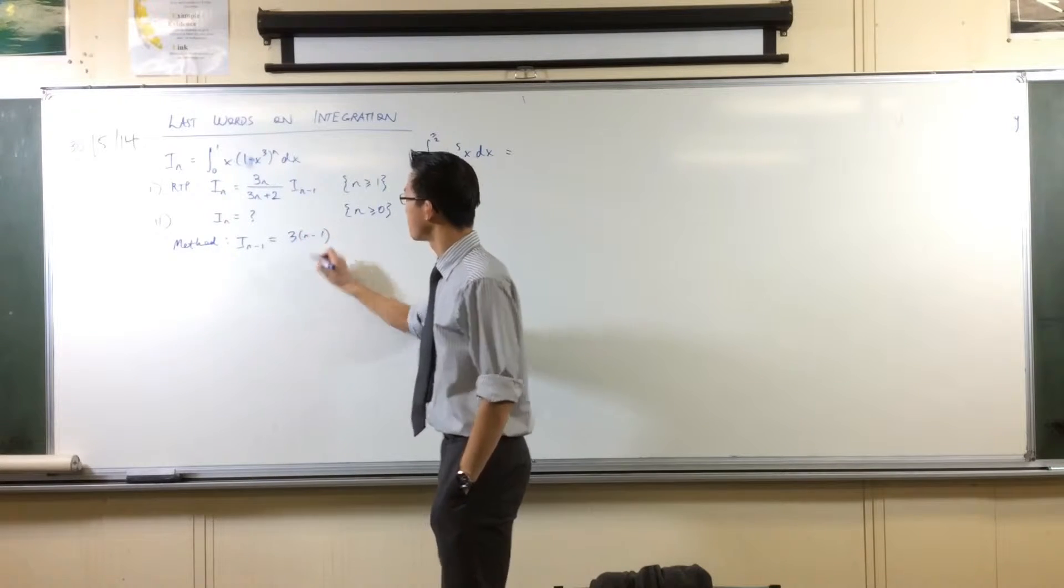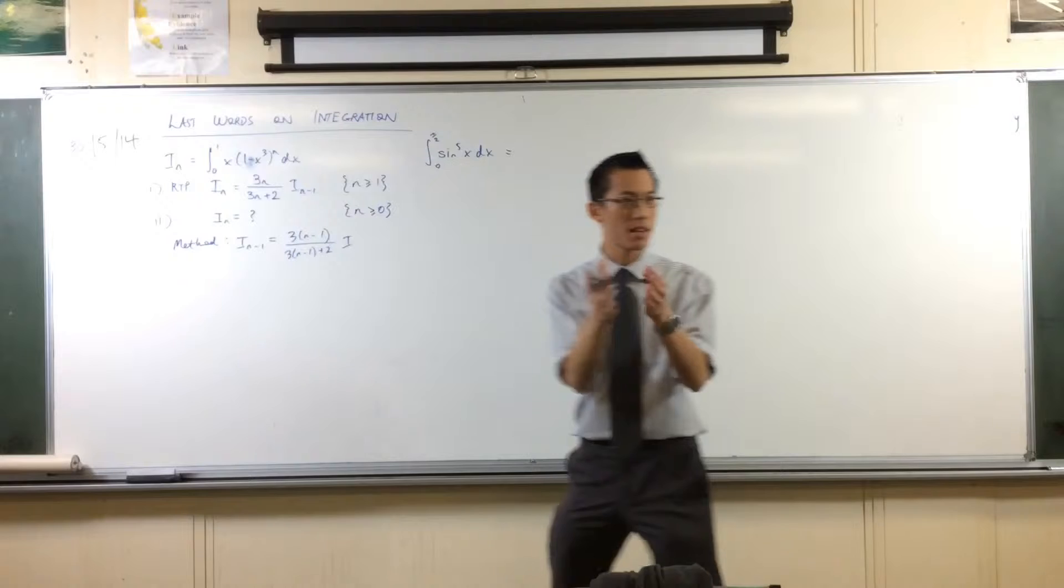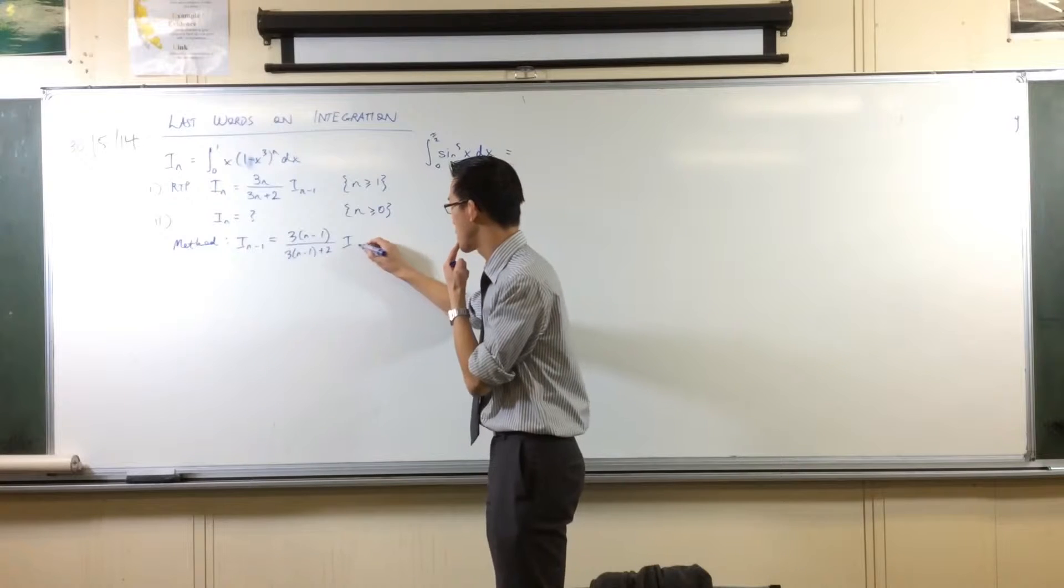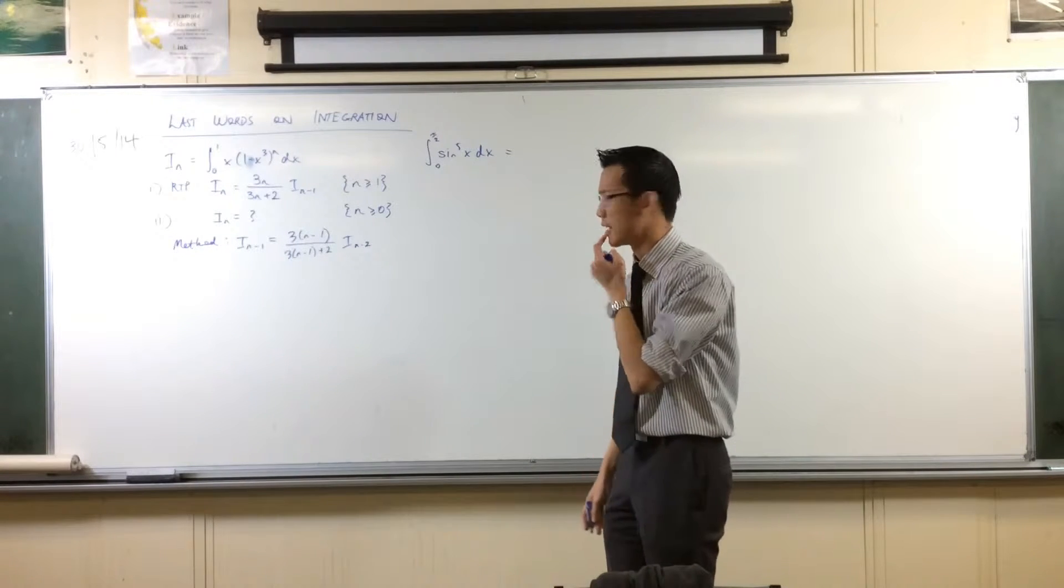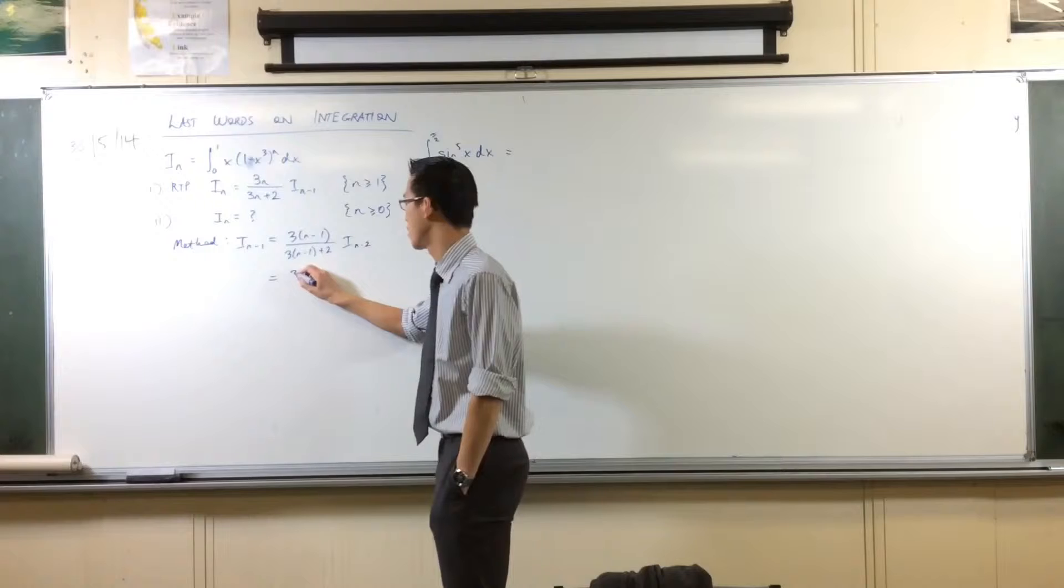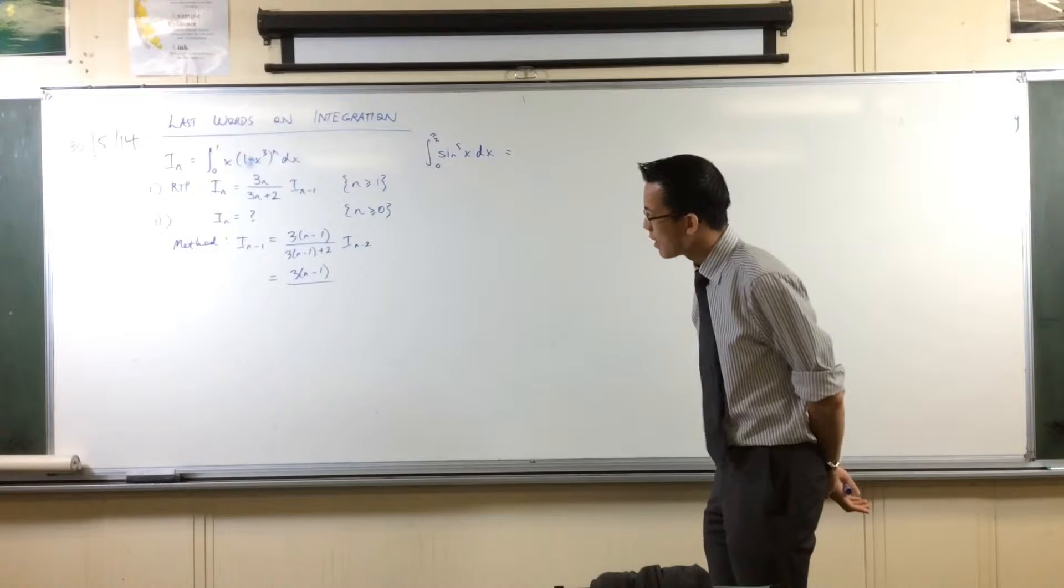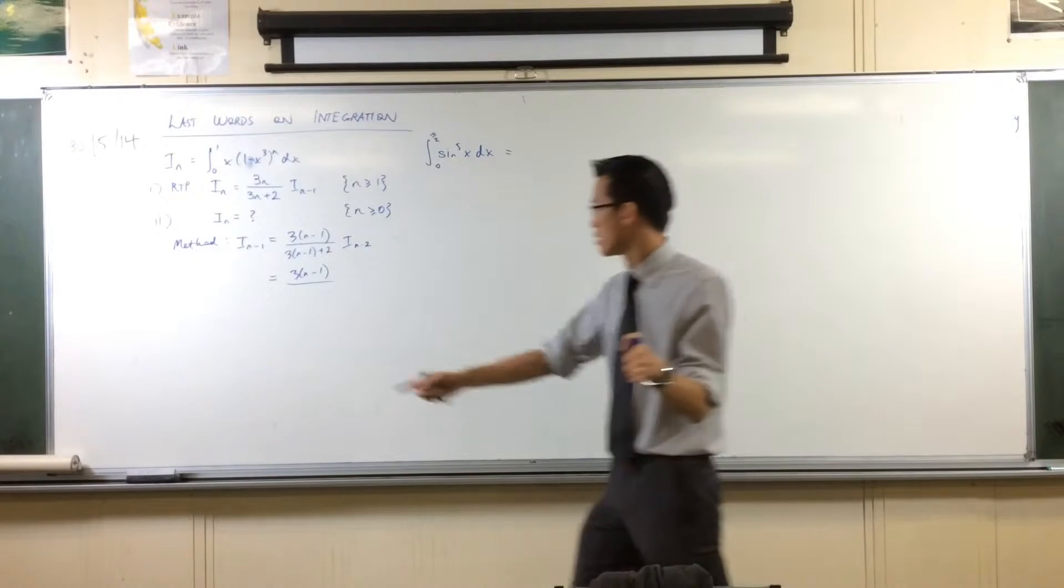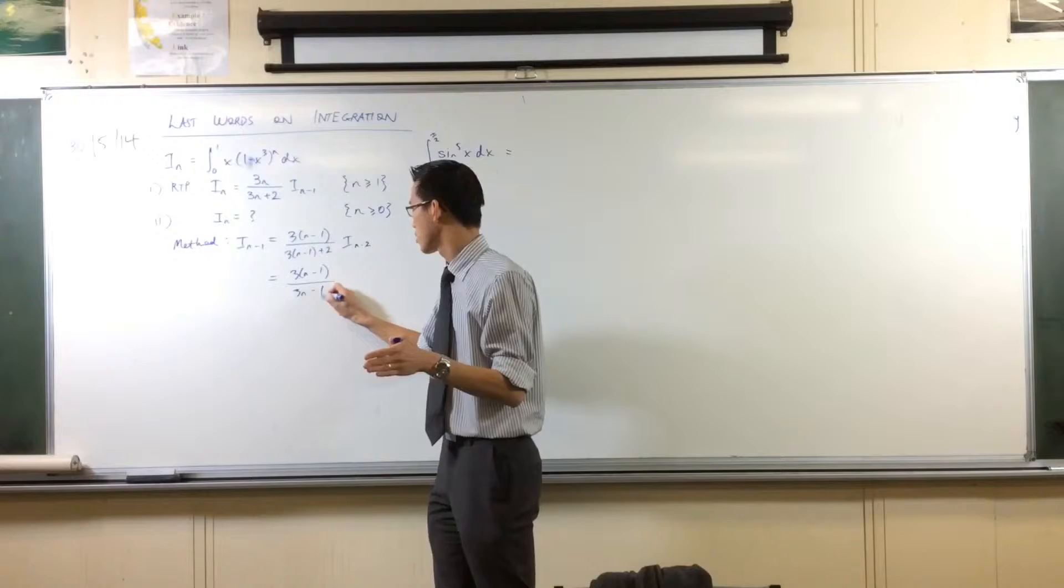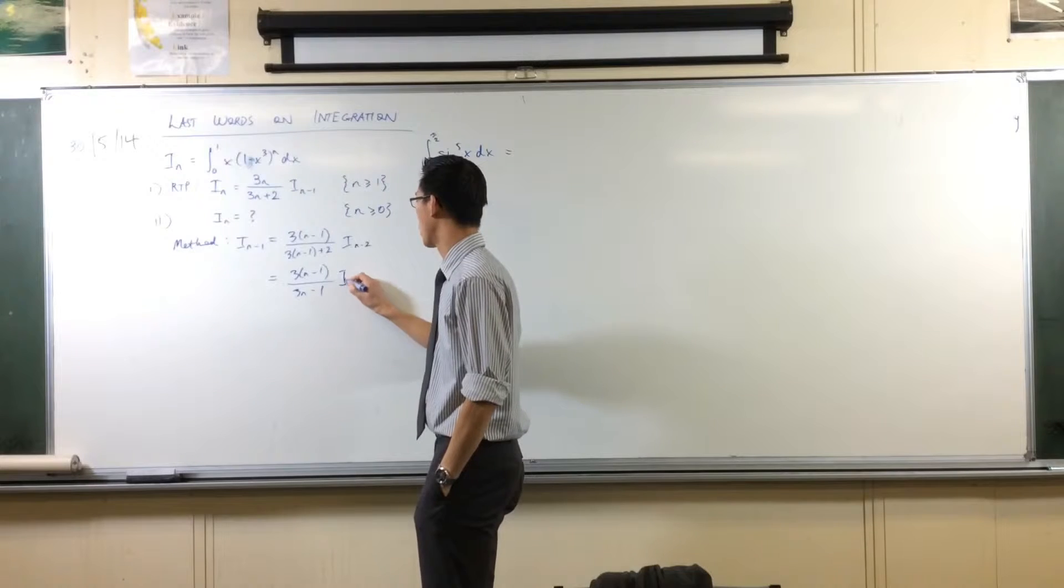So in this case, everywhere I see n here, I'm going to stick in an n minus 1. Let's see what happens. You're going to get 3n minus 1 over 3n minus 1 plus 2. And now, since I'm looking at the previous one, what's the recurrence relation? I_{n-2} over here. I'm just going to tighten this up a little bit. This guy down the bottom, I want to get rid of that 2 and make it simpler.